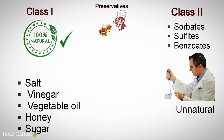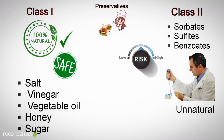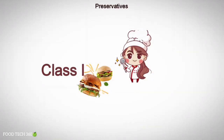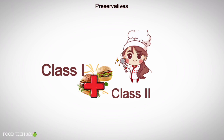As Class 1 preservatives are natural, there is no need to be cautious while using them. On the other hand, some risk is involved when using Class 2 preservatives as they are chemicals. This means there are certain limits and more restrictions implemented in their usage. In some products, only Class 1 preservatives are used, while in others, Class 2 preservatives are also used, or a mix of both classes is used to ensure more longevity.